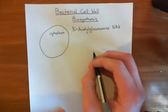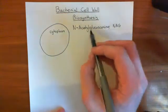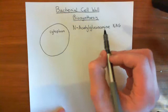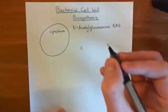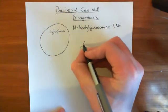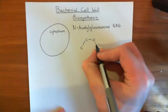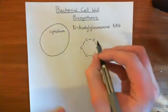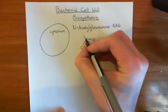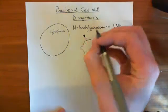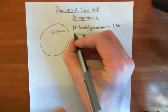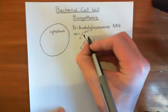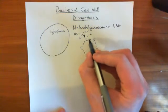N-acetylglucosamine is based on glucosamine, which has an acetyl group on the amino group of that glucosamine molecule. Glucosamine is based on glucose — a six-membered ring where five members are carbons and one is an oxygen. Off that carbon, you have another carbon with a hydroxyl group and two hydrogens coming out of the page towards you, and a hydrogen going back away from you.